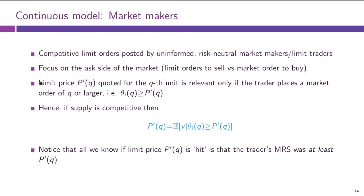The Glosten model is effectively very similar to Kyle's model. We have one informed trader, one uninformed trader, and instead of a dealer, we now have a limit trader — a trader who submits limit orders.